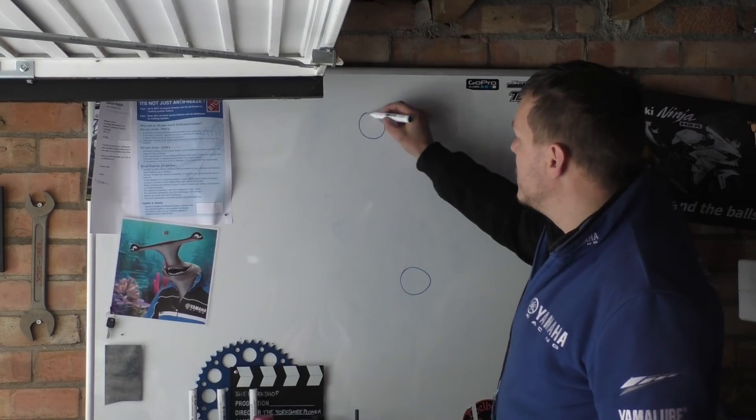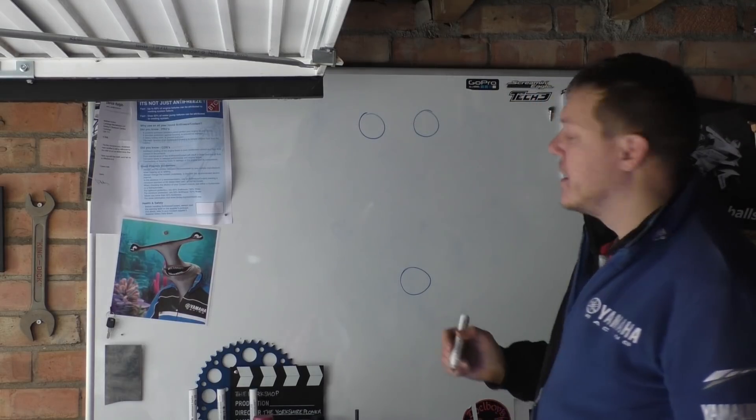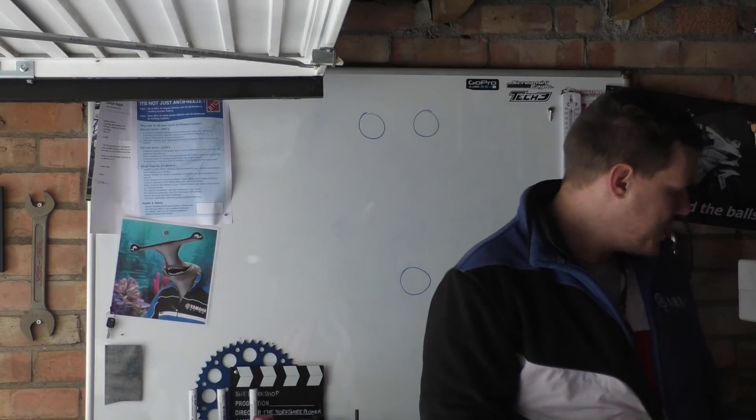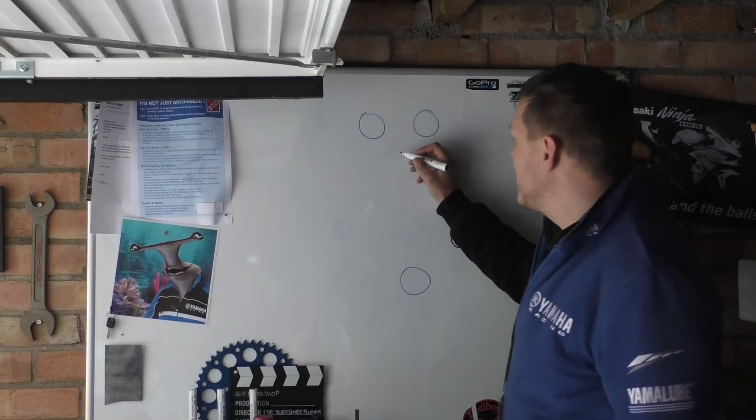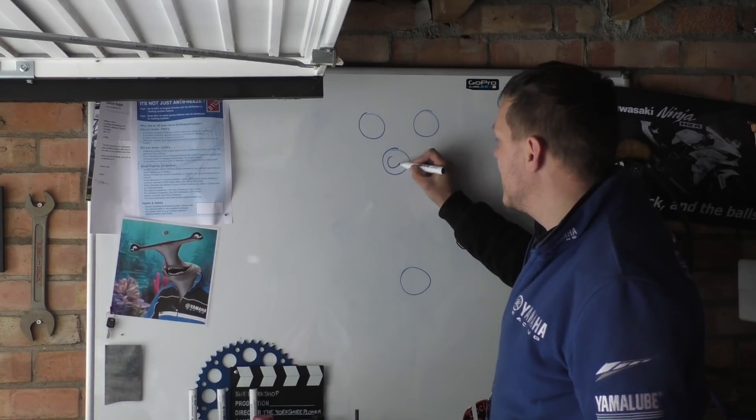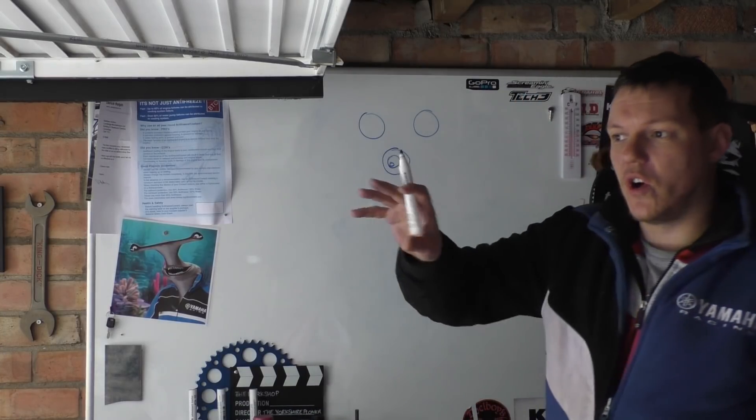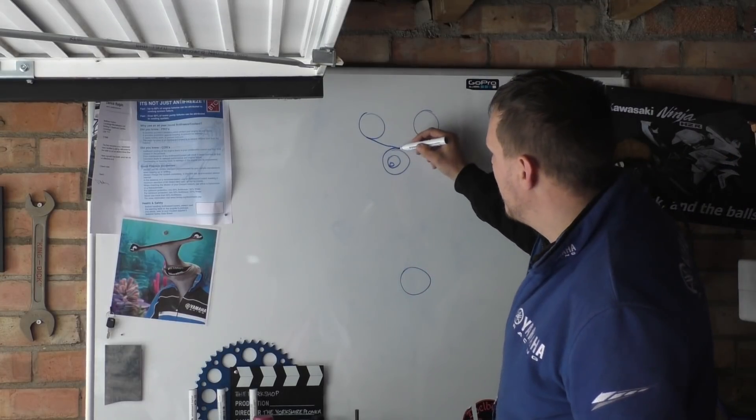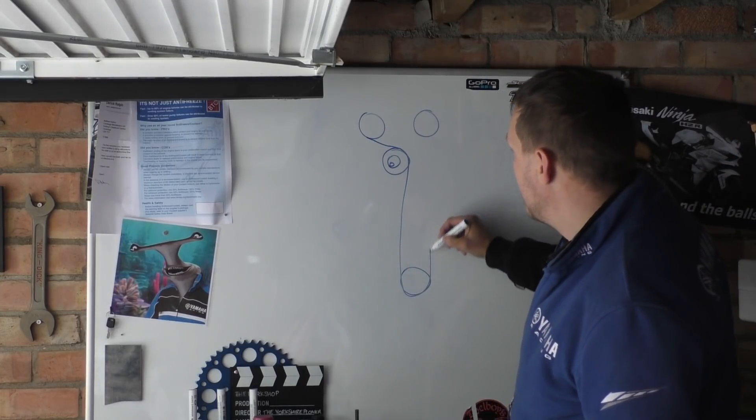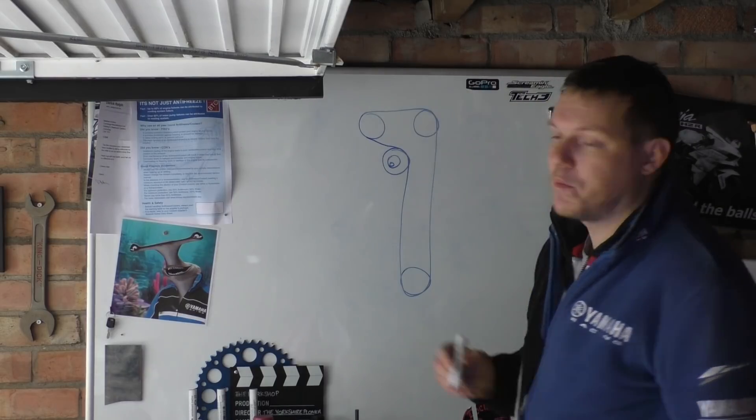Generally with the head that we have here your tensioner is actually a spring eccentric tensioner so that basically winds out and applies force to the belt like this. They are tooth belts, they can't be V-belts.